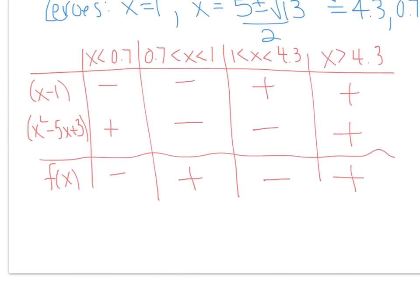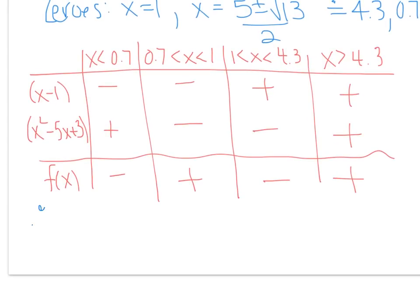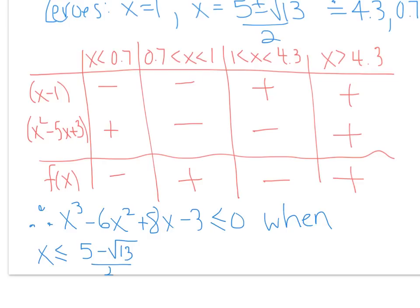Okay, so when reporting our answers, don't forget then, we'll go back to our original question. Therefore, then, we have x^3 - 6x^2 + 8x - 3 is less than or equal to zero when we want to look for the ones that were overall negative. So when x is less than or equal to (5 - √13)/2 and when x is between one and (5 + √13)/2.